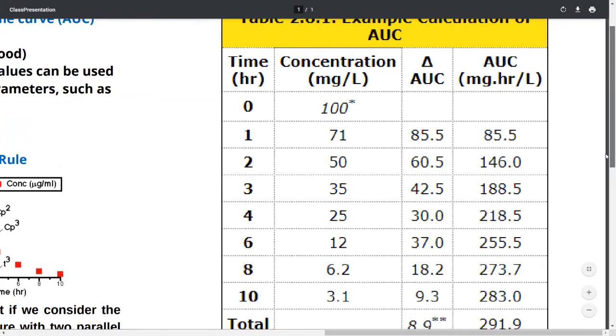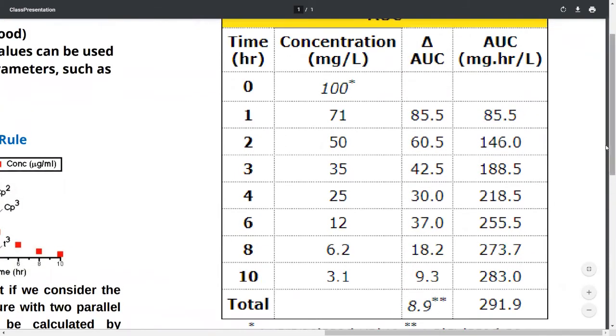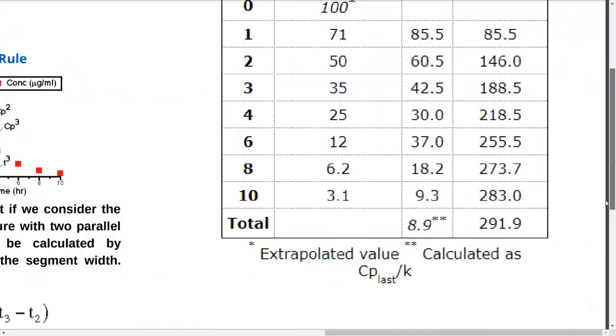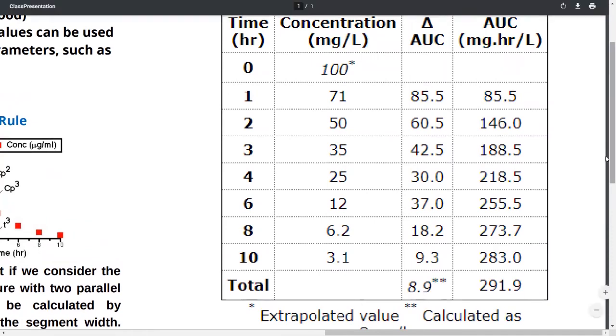The first value and the last value are the extrapolated values. Here we can see that the first value and the last value have been obtained from the extrapolation of the curve. This is how it is calculated.